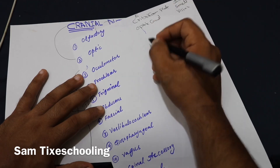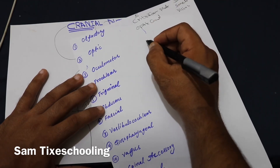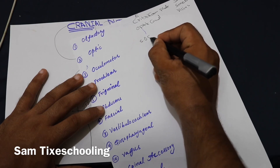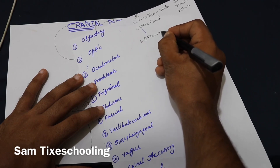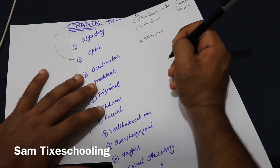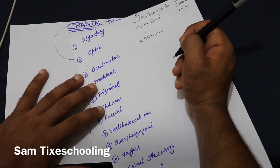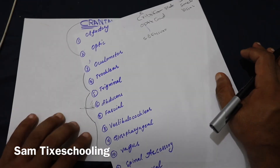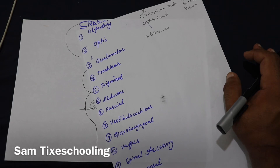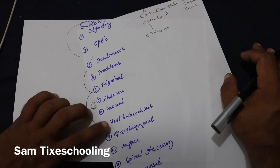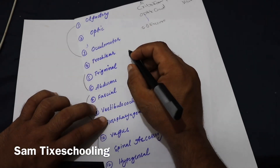For the oculomotor nerve, it exits from your superior orbital fissure. Its function is motor — it supplies the extrinsic eye muscles and the levator palpebrae superioris muscle, and it also controls the pupillary sphincters.